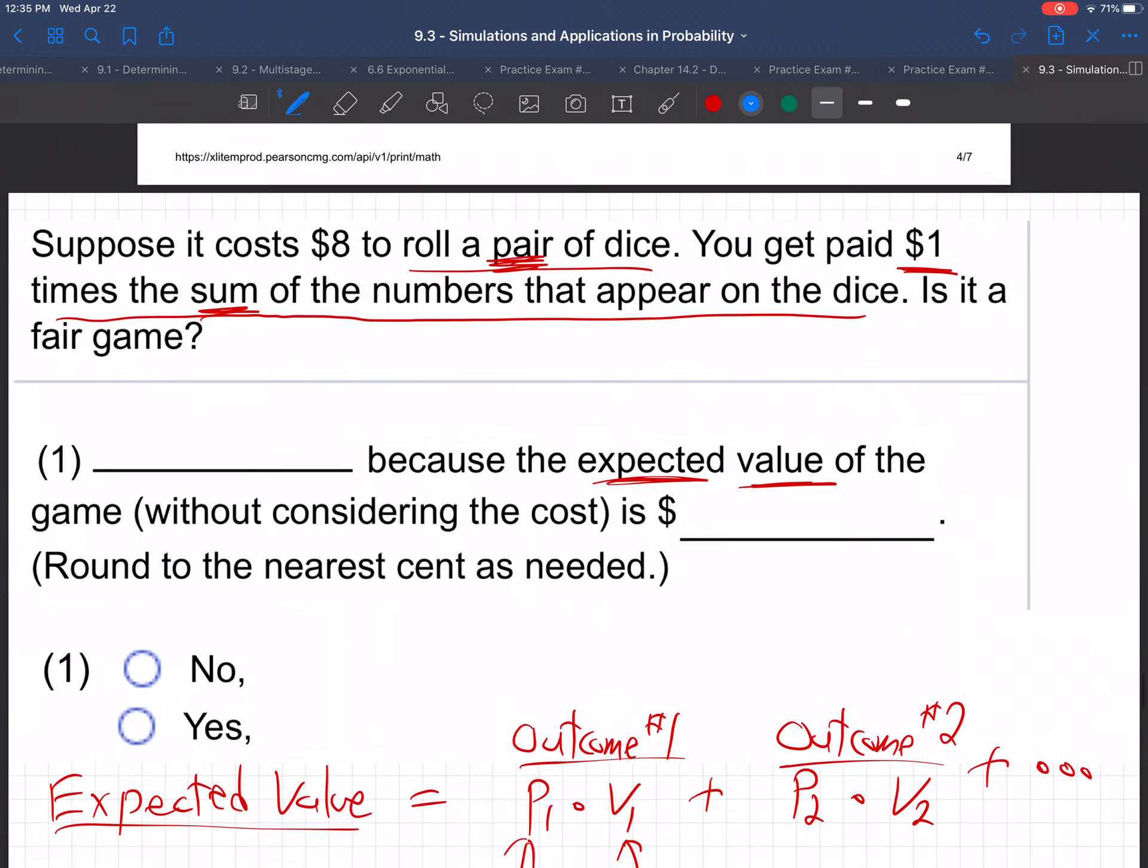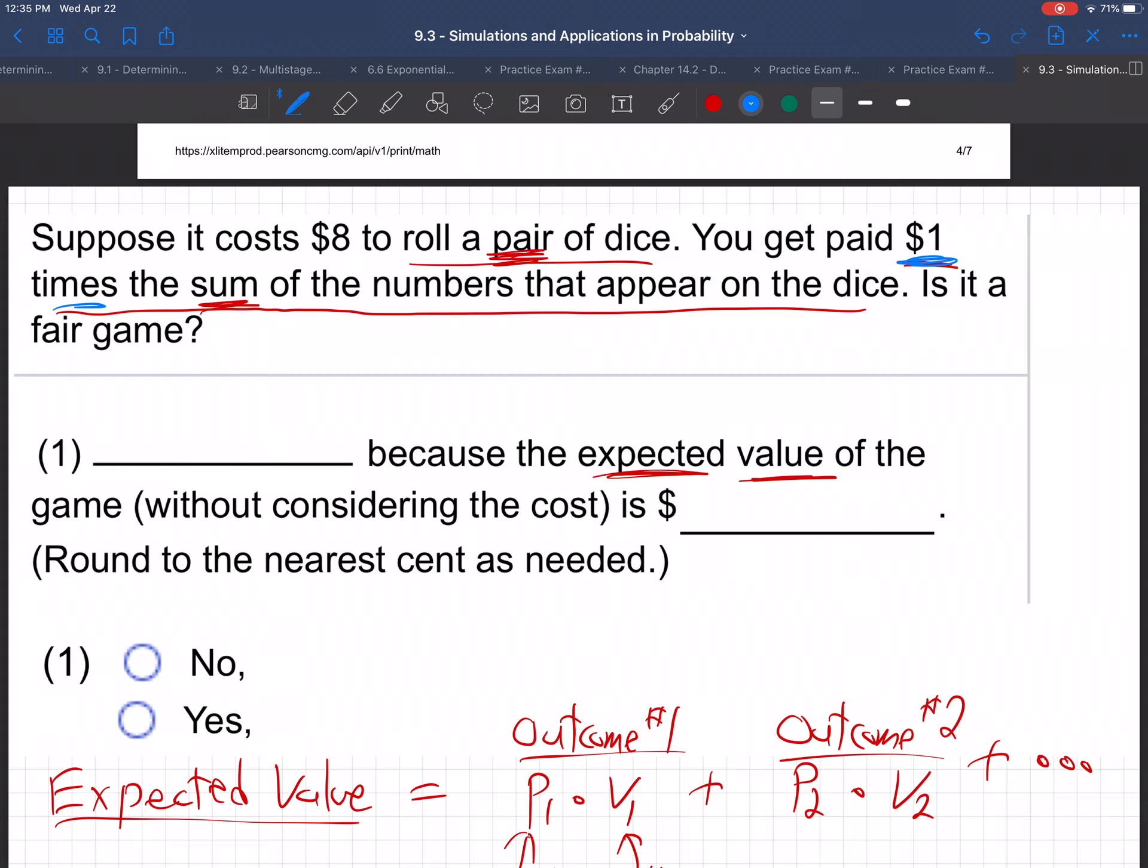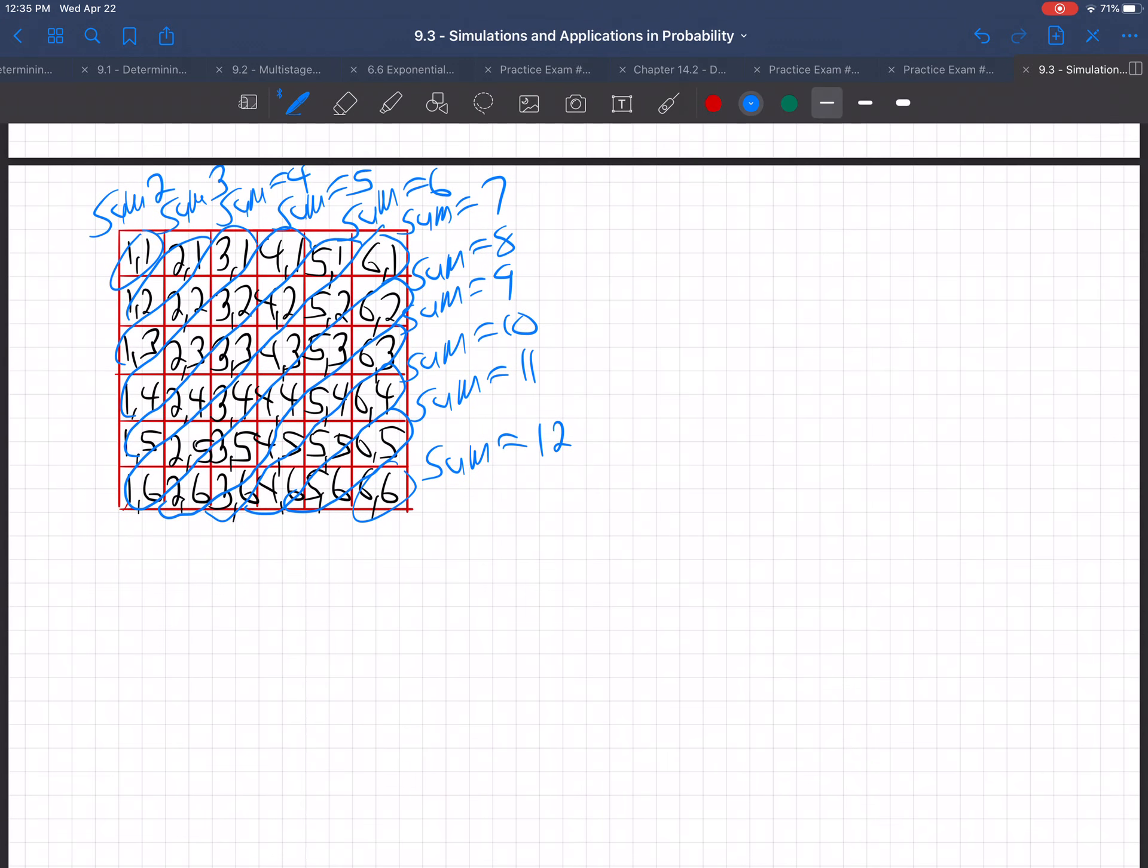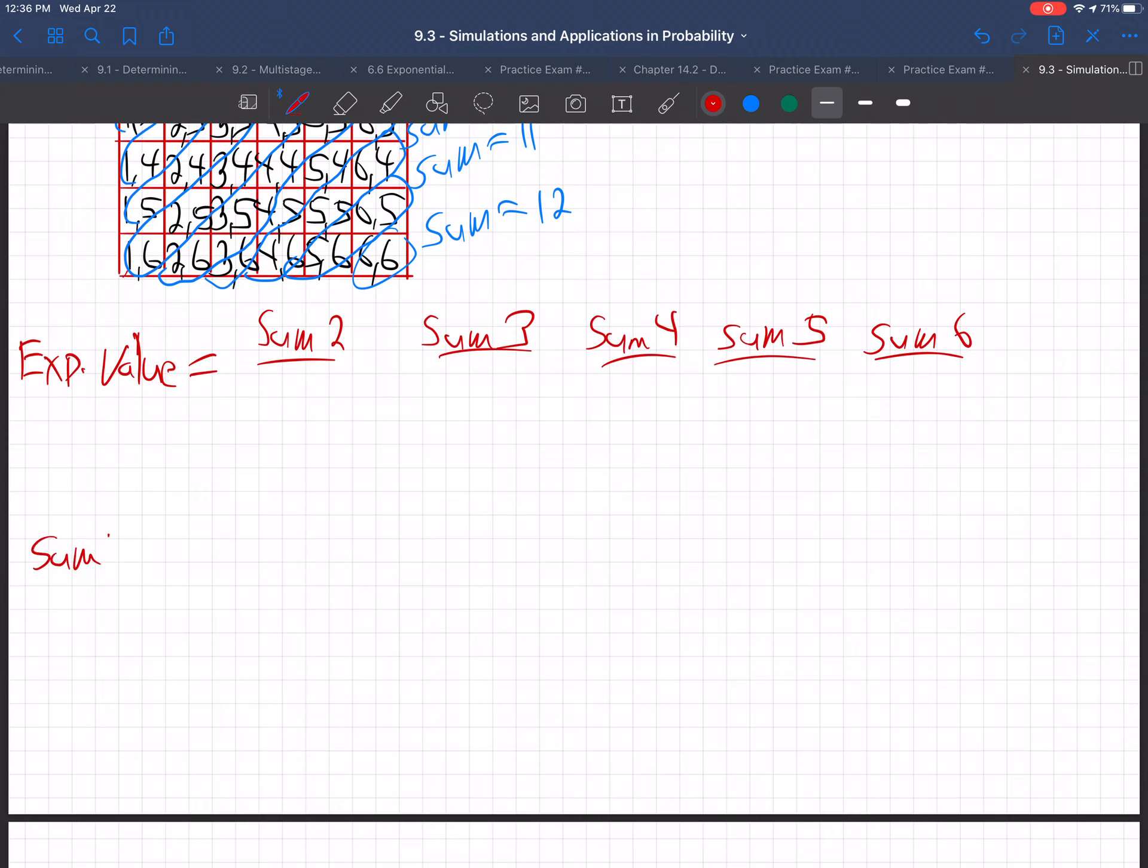So now, what's the question? When you roll the two dice, you get $1 times the sum of the numbers that appear on the dice. So to figure this out, and we want the expected value, we've got to go through the various outcomes. You could get a sum of 2 or a sum of 3, 4, 5, 6, keep going, 7, 8, 9, 10, 11, or 12. So you get any of these sums.